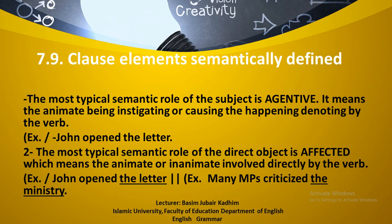The most typical semantic role of the direct object is affected — meaning the animate or inanimate entity involved directly by the verb. Taking the same example, 'John opened the letter': the letter is the affected entity, and since it is affected, it is the object. Or consider 'Many MPs criticize the ministry' — the letter is inanimate while the ministry can be animate or inanimate. The most typical semantic roles are: agentive for the subject and affected for the object.